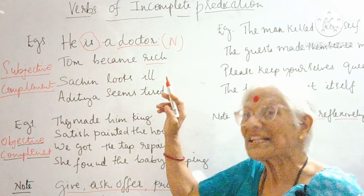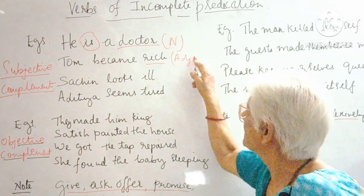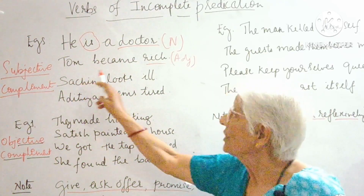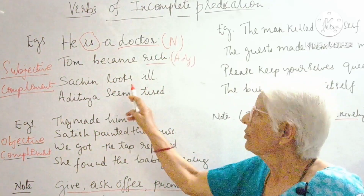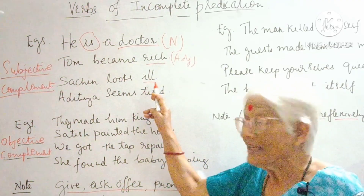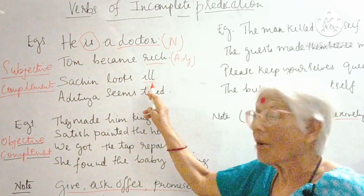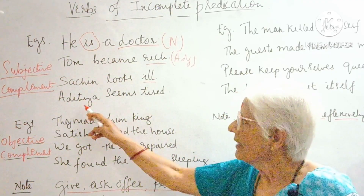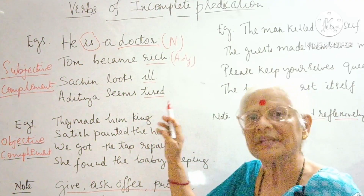The complement is 'rich' — it's an adjective. The word 'rich' belongs to the subject Tom, so here it is a subjective complement. 'Sachin looks ill' — the word 'ill' belongs to Sachin, so here the complement is a subjective complement. Next: 'Aditya seems tired' — again, the word 'tired' is a complement, an adjective.